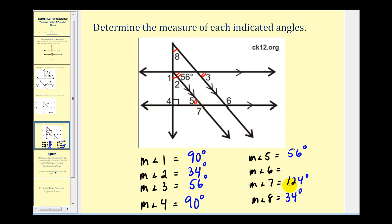The measure of angle seven was one hundred twenty-four degrees. Therefore that's the measure of angle six as well. And now we have the measure of each angle. So that's going to do it for this video. Thank you for watching.